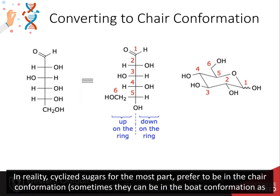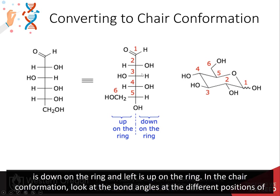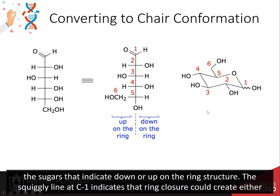In reality, cyclized sugars for the most part prefer to be in the chair conformation, although sometimes they can be in the boat conformation as well. Thus, it's useful to be able to recognize the stereocenters in the chair conformation. Recall that in the Fischer projection, right is down on the ring structure and left is up on the ring. In the chair conformation, look at the bond angles at the different positions of the sugars that indicate down or up on the ring structure.